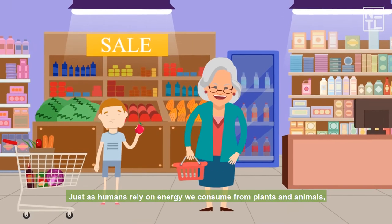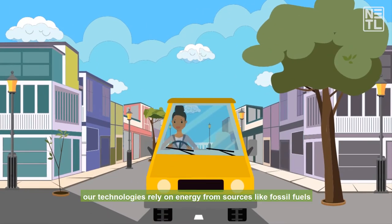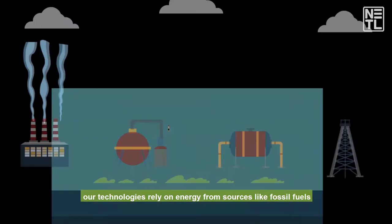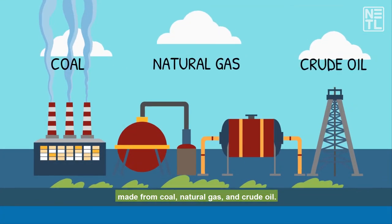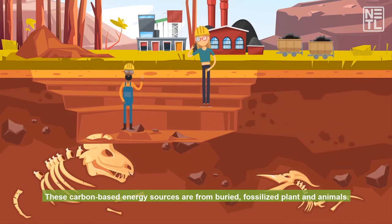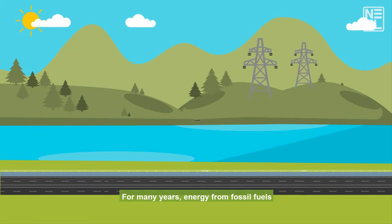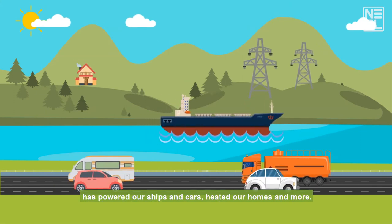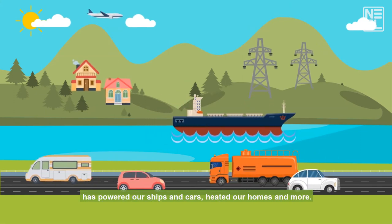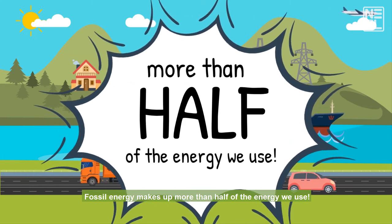Just as humans rely on energy we consume from plants and animals, our technology relies on energy from sources like fossil fuels made from coal, natural gas, and crude oil. These carbon-based energy sources are from buried fossilized plants and animals. For many years, energy from fossil fuels has powered our ships and cars, heated our homes and more. Fossil energy makes up more than half of the energy we use.